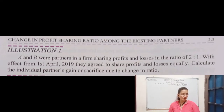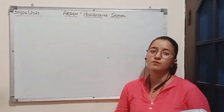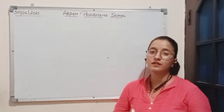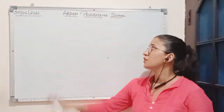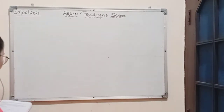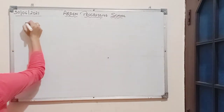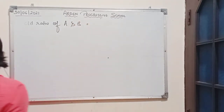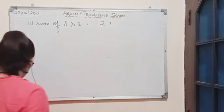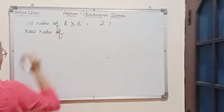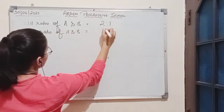We have to calculate the individual partner's gain or sacrifice due to the change in ratio. With the change in profit sharing ratio among existing partners, one partner always has to sacrifice some portion of their share and some partners gain some portion. According to the question, old ratio of A and B is 2:1 and the new ratio they decide to share in future is 1:1.